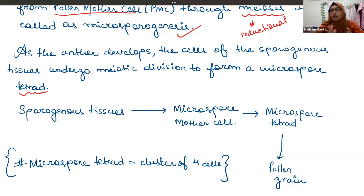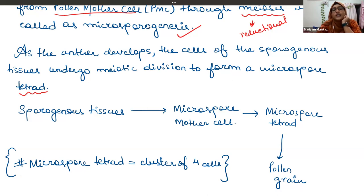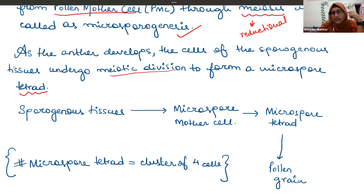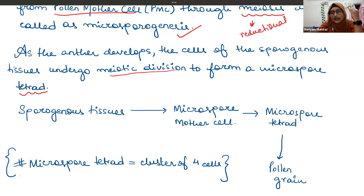A group of cells make tissues, and a group of tissues make an organ. The cells present in the sporogenous tissue undergo meiotic division — reductional division — to restore the ploidy level, and they form a microspore tetrad. Tetra means four.